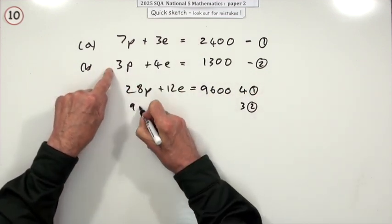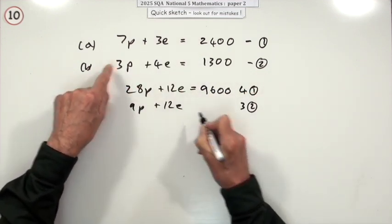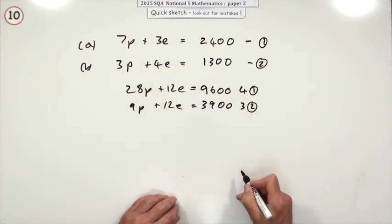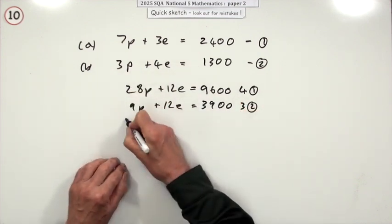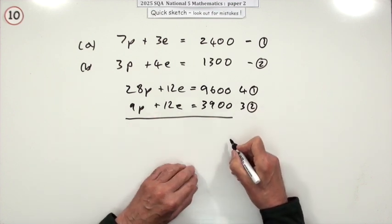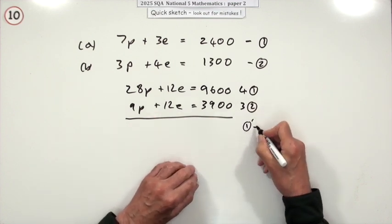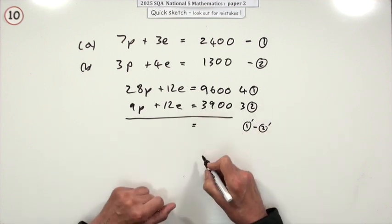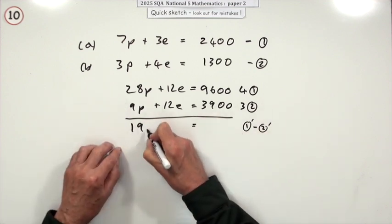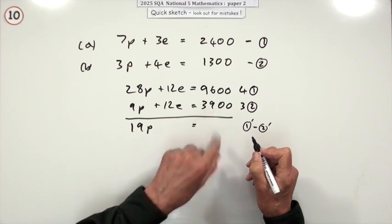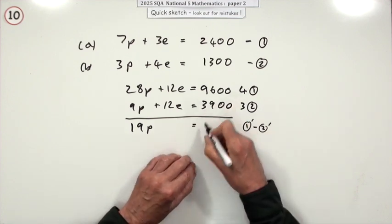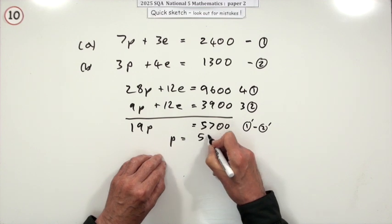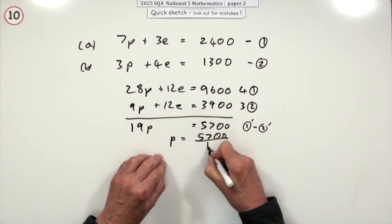Three of these, 9p plus 12e equals 3,900. Now that I've got them the same and they've got the same sign, I can just subtract them. So I'm going to do, I'll call it one dashed, the altered one minus two dashed. That'll just come to zero, which means this part is 19p. That's a bit nasty. But that part there luckily is 5,700.